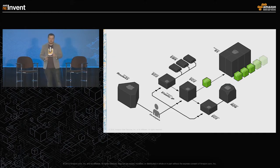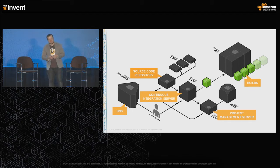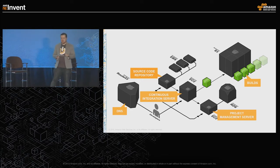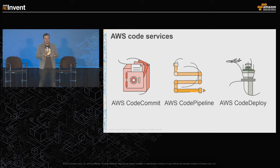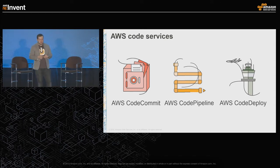Traditionally on AWS, you might use an EC2 instance for your Git repository, another for your CI server, another for project management software, and publish builds to S3. But what if you didn't want to manage all that? Over the past year, we released three new code services: AWS CodeCommit, AWS CodePipeline, and AWS CodeDeploy. Let's walk through them.